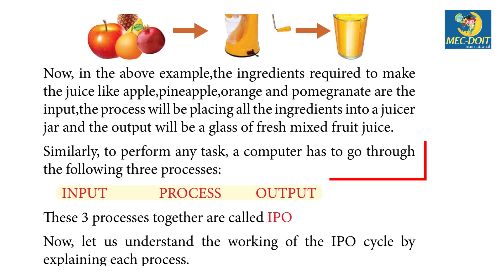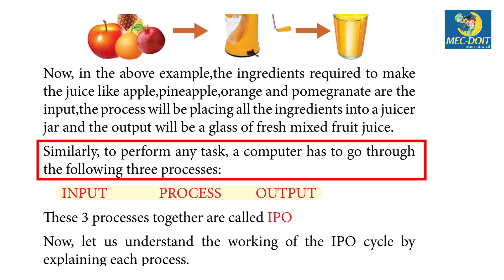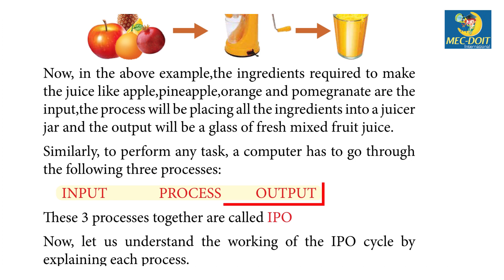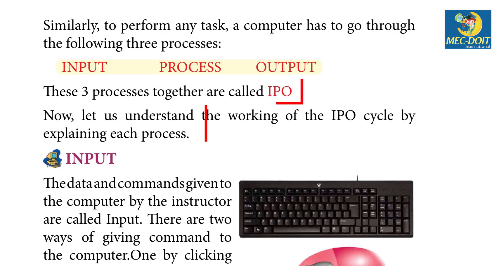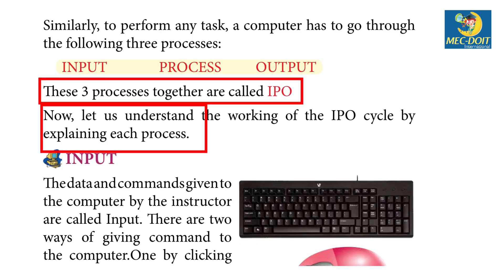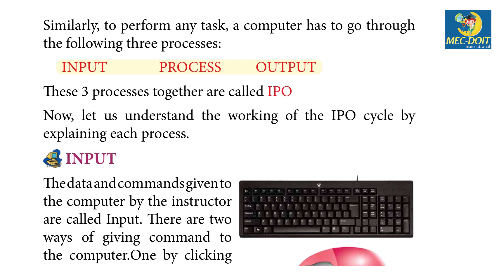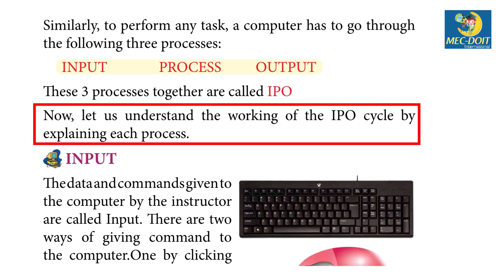Similarly, to perform any task, a computer has to go through the following three processes: Input, Process, and Output. These three processes together are called the IPO cycle. Now let us understand the working of the IPO cycle by explaining each process.